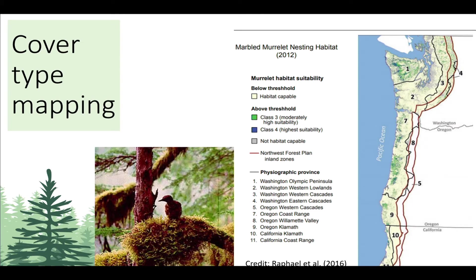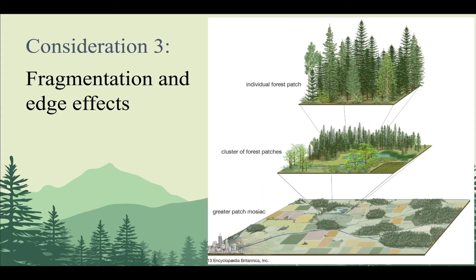Compare that to the cover type mapping for the marbled murrelet. One key difference is that marbled murrelets spend so much of their lifetime at sea — they fly and forage every day to the ocean and back to their nest sites. So one of the major resources we consider when developing these maps is actually a suitable commute distance to the ocean. Distance to ocean is a significant resource for marbled murrelets where it's not significant for other species.